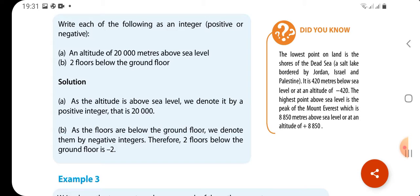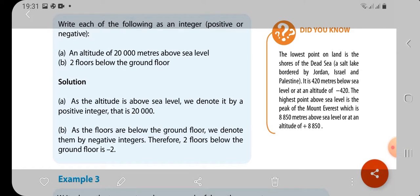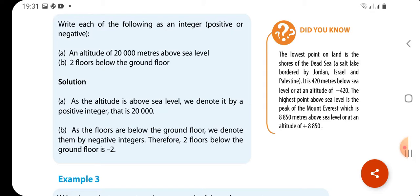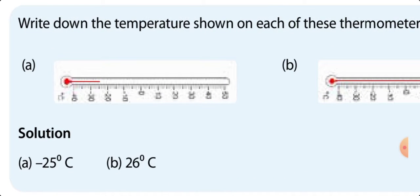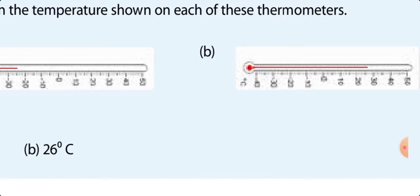Write each of the following as an integer, positive or negative. An altitude of 20,000 meters above the sea level. As the altitude is above the sea level, we denote it by a positive integer. 2 floors below the ground floor. It is below the ground floor, so we denote it by a negative integer. That is, 2 floors below the ground floor is negative. For example, write down the temperatures. The first one is negative 25, because it is below 0. The second one is above 0, is 26 degrees Celsius.